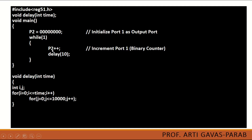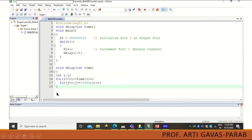Here we are simply incrementing P2. The value of P2 will be incremented one by one — so initially it is zero, then it will become one, then two, three, and it will go up to 2 raised to 7. That is how all the values are going to be displayed. Then we have called the delay function with a value of 10, which is the number of times you want to execute that loop. This makes the processor busy for that many steps, creating a delay in your program.